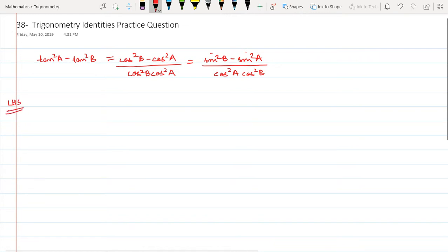This was asked in a previous year. I have tan²A minus tan²B. The moment I see this, I can add a one on both sides. So I add a one here.